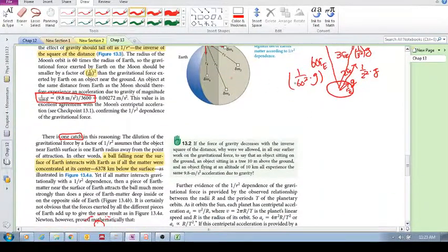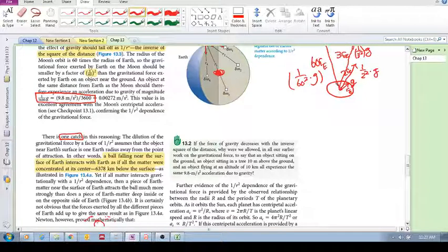And the other thing that we saw is that the assumption is that all of the material is concentrated at the center of the sphere. So the radius is from the center of the sphere to that surface.